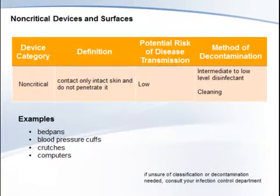Non-critical items are those that come in contact with intact skin but not mucous membranes. Intact skin acts as an effective barrier to most microorganisms. Examples of non-critical patient care items are bedpans, blood pressure cuffs, crutches, and computers. In contrast to critical and some semi-critical items, most non-critical reusable items may be decontaminated where they are used and do not need to be transported to a central processing area. The CDC guideline mentions a 1991 study by Favreau and Bond which expanded this Spaulding scheme by dividing the non-critical environmental surfaces into housekeeping surfaces and medical equipment surfaces, which may be something to consider at your facility.